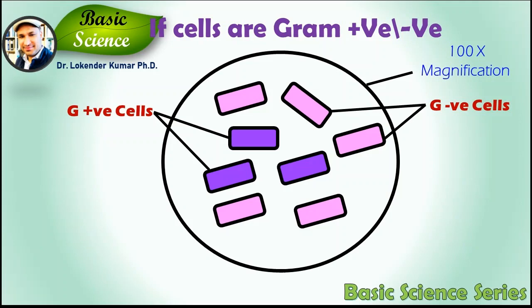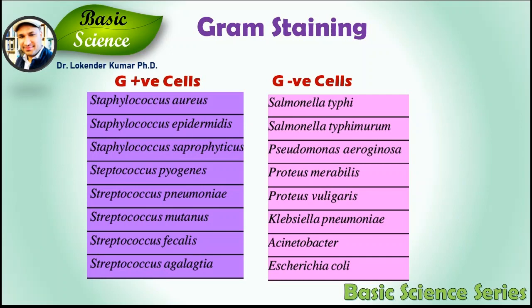Here are a couple of examples of gram-positive and gram-negative bacterial cells. Common examples of gram-positive cells include Staphylococcus aureus, Staphylococcus epidermidis, Staphylococcus saprophyticus, Streptococcus pyogenes, Streptococcus pneumoniae, Streptococcus mutans, and Streptococcus faecalis. Common examples of gram-negative cells include Salmonella typhi, Salmonella typhimurium, Pseudomonas aeruginosa, Proteus mirabilis, Proteus vulgaris, Klebsiella pneumoniae, and E. coli.